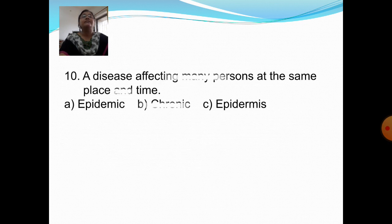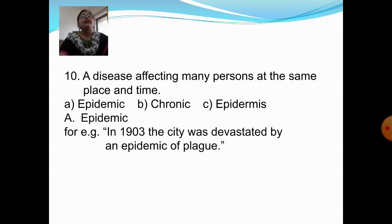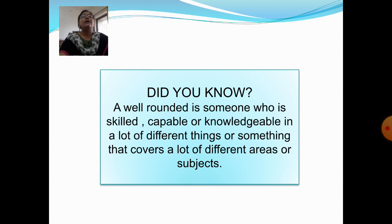Next question: A disease affecting many persons at the same place and time. Option A: Epidemic. Option B: Chronic. Option C: Epidemics. Answer is Option A: Epidemic. For example, in 1903 the city was devastated by an epidemic of plague. Fun fact: A well-rounded person is someone who is skilled, capable, or knowledgeable in a lot of different things, or something that covers a lot of different areas or subjects.